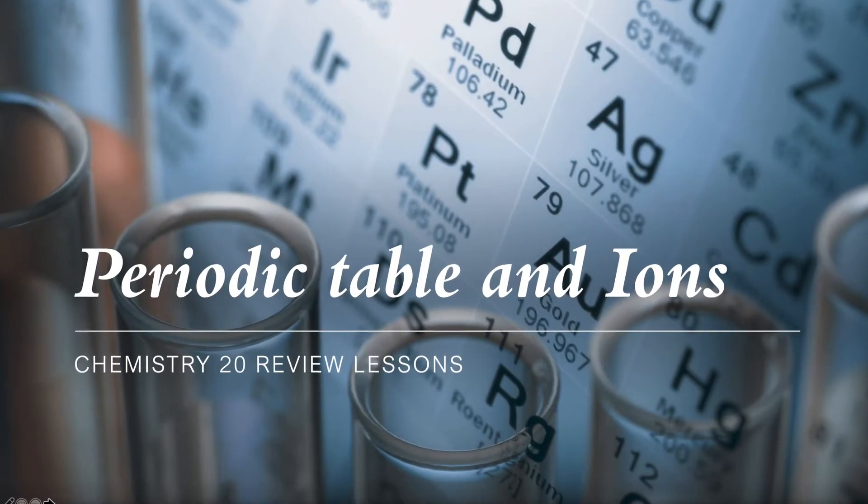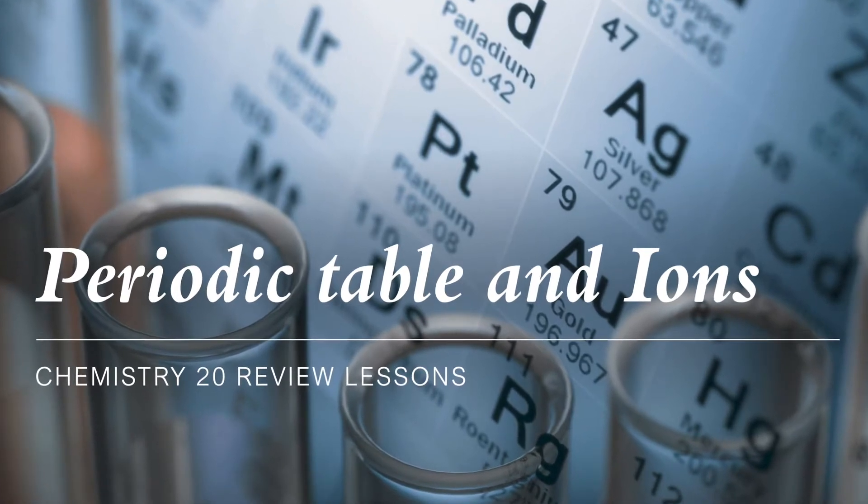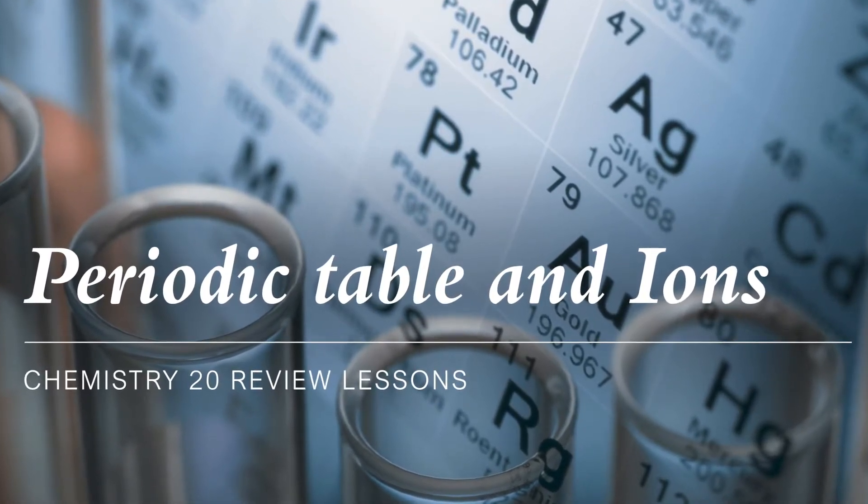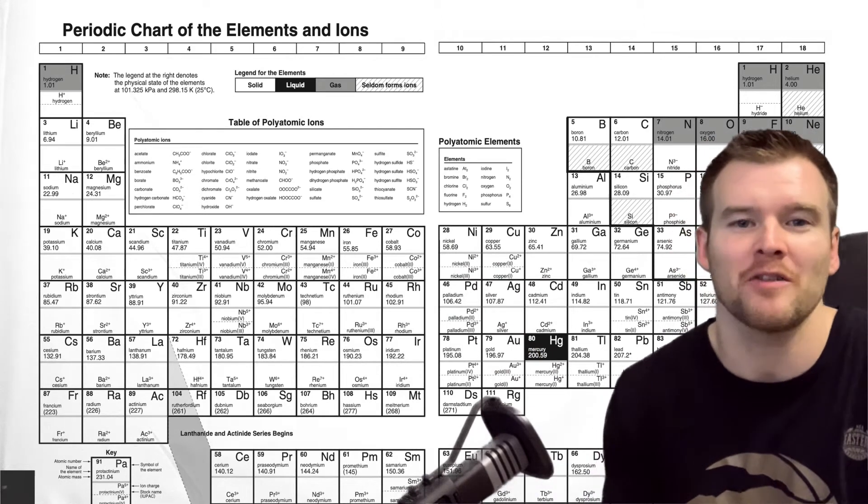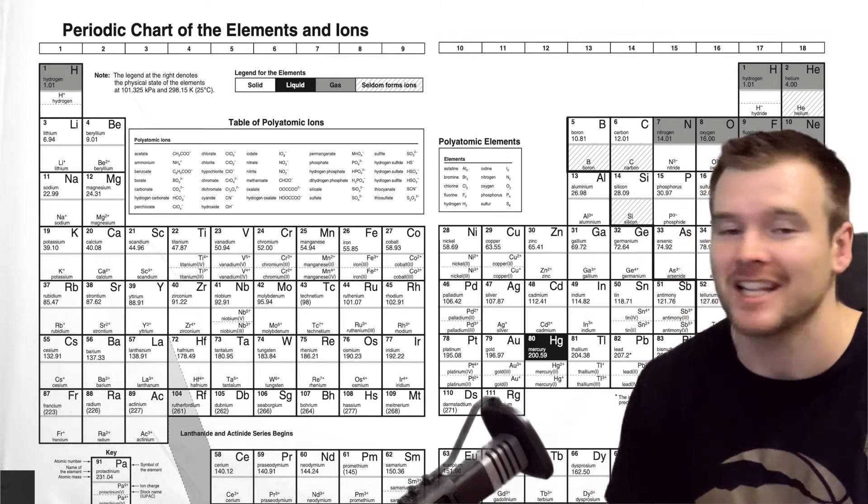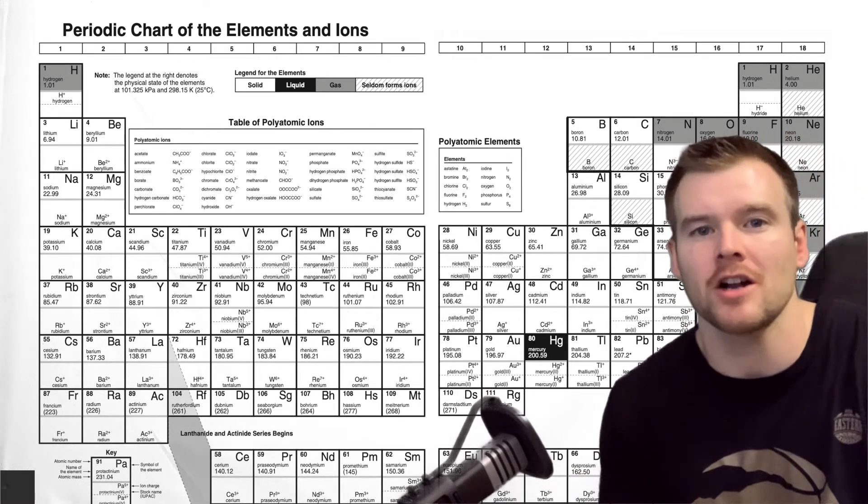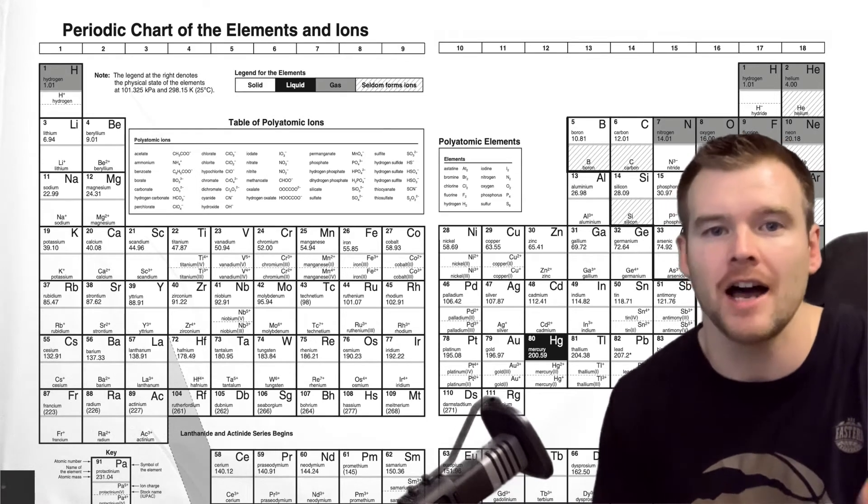Okay, welcome back Chemistry 20 students to our next review lesson. Today we're going to be talking about the periodic table and ions. This is the periodic table of elements, and if you're not familiar with it already, you probably will be by the end of this course, as we're going to be talking about this a lot. Today we're just going to start looking at how it's organized and how that relates to some characteristics of elements.